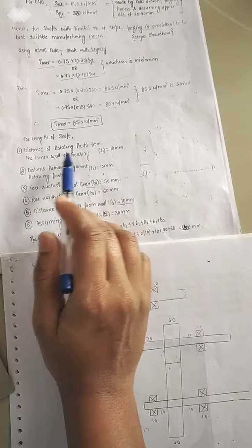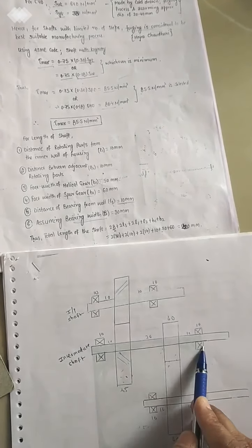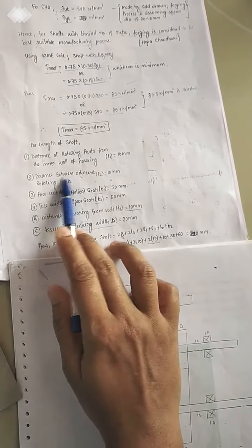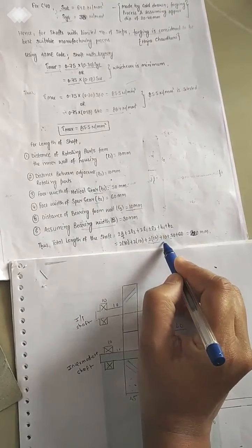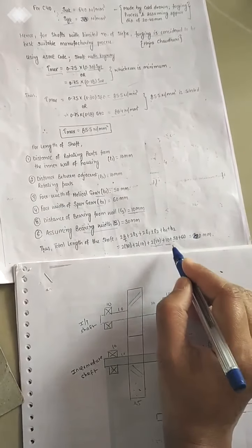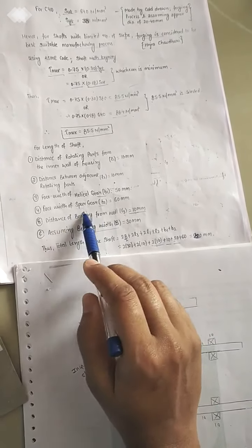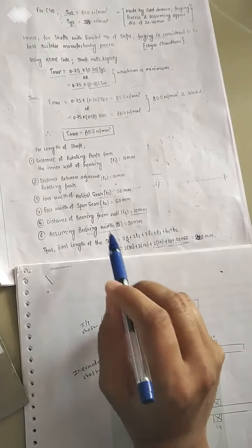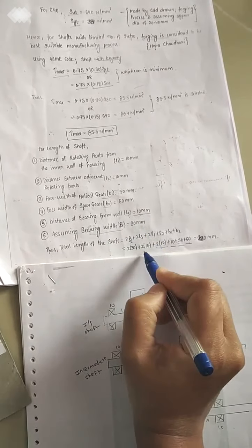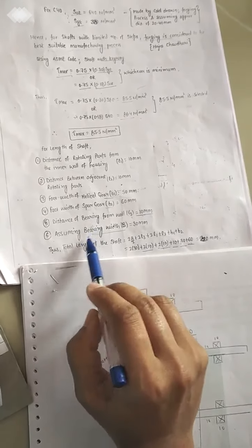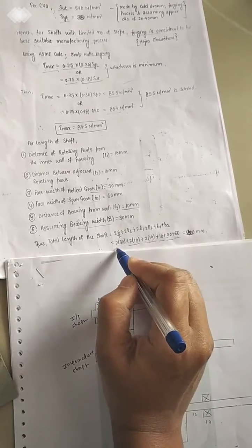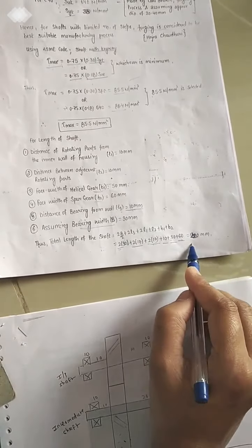Assembling all components: the distance of the rotating part from the inner wall is 2l1 = 2 × 10 = 20 mm; the distance between adjacent rotating parts is l2 = 10 mm; the face width of the helical gear is b1; the face width of the spur gear is b2; the distance of the bearing from the wall is 2l3; and assuming a bearing width of 30 mm, with two bearings used. Adding all these figures gives the total length of the shaft.